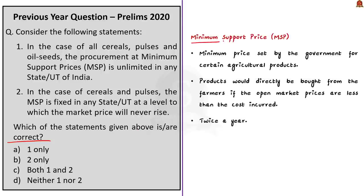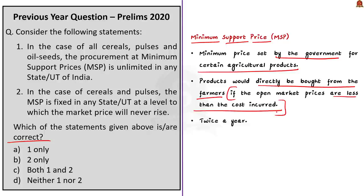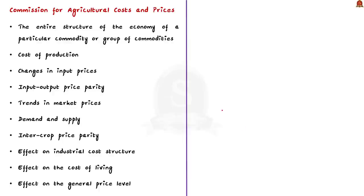First let us see about MSP. MSP stands for minimum support price — the price set by the government for certain agricultural products at which the products would be directly bought from farmers if the open market prices are less than the cost incurred. MSP is a form of government intervention to ensure farmers against a steep decline in prices of their goods and help them prevent losses. The government of India sets the MSP twice a year to protect farmers against a fall in prices in a year of bumper production. When the market price falls below the declared MSP, the government purchases the entire quantity from the farmers at MSP.